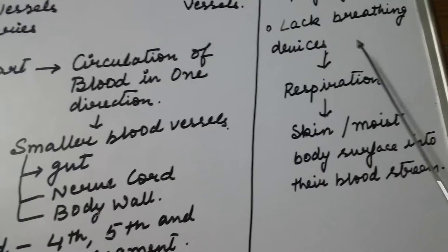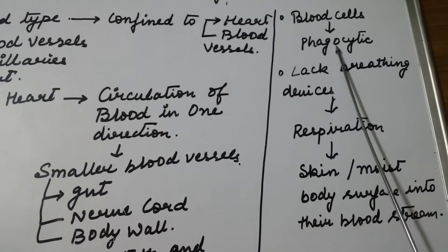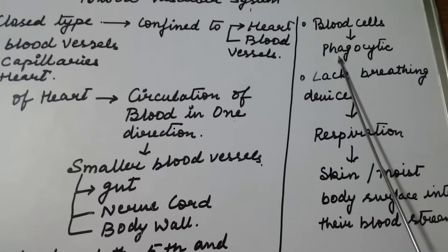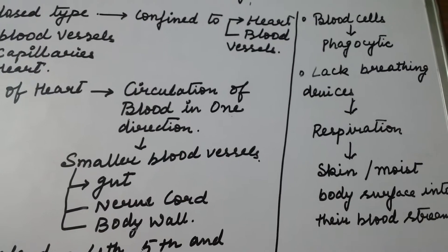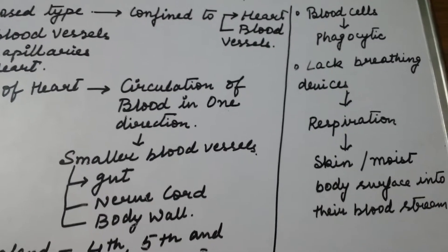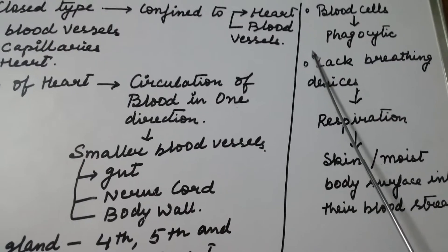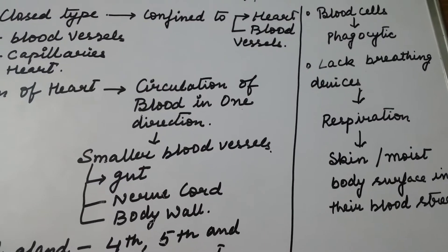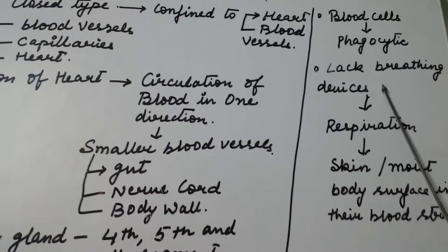The blood cells that are formed by the blood glands are phagocytic in nature, which means they have the defensive characteristic to fight against diseases.